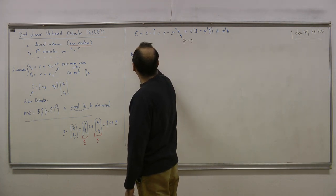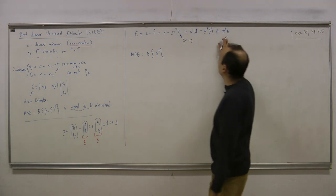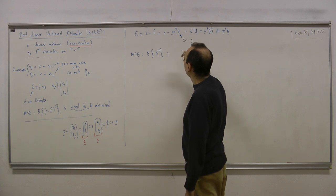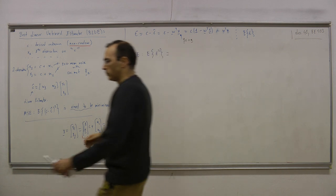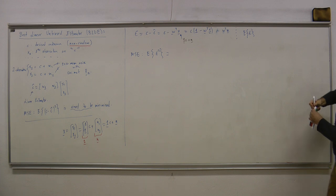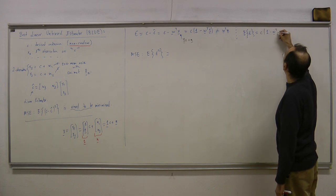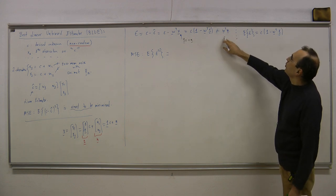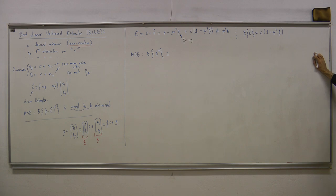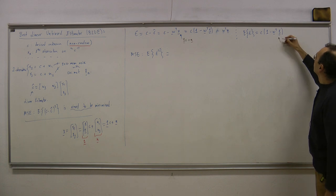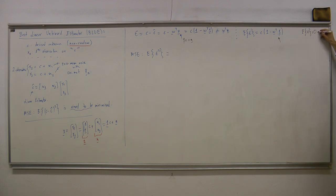The MSE criteria is E[ε²]. The expected value of the error is E[ε] = C(1 - W^T 1), since N is composed of zero-mean random variables. If this expected value equals zero, we call the estimator an unbiased estimator.